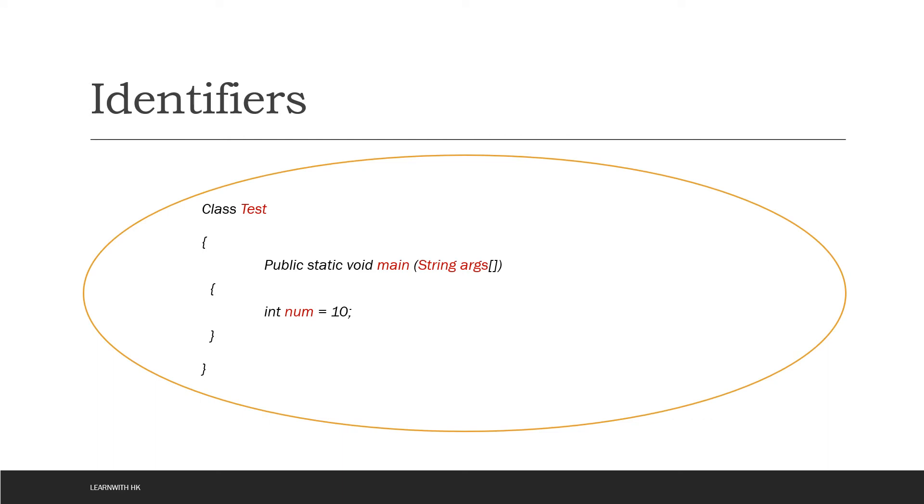If you take an example, this test, this main, this string, this args, and this num are nothing but the identifiers. Test is nothing but a class name given to that identifier. Main is a method. Method is also an identifier.